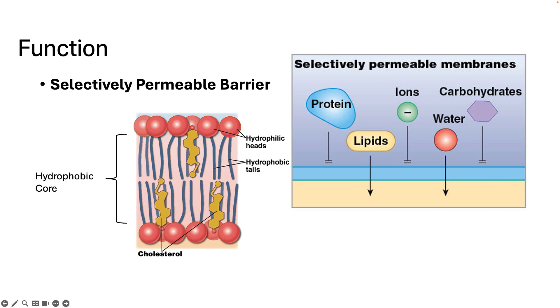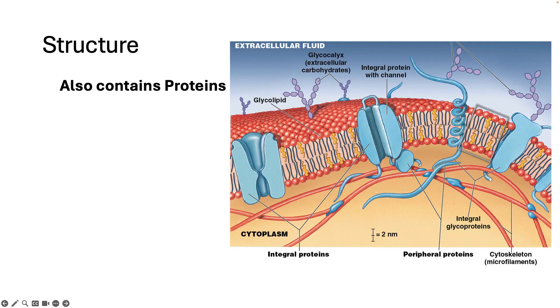So what can we do about getting things into and out of the cell? Luckily, we have proteins embedded in the bilayer. Here you can see a cross-section of the lipid bilayer with the bottom of the picture representing the inside of the cell, the intracellular fluid, and the top of the slide representing the outside of the cell, the extracellular fluid.